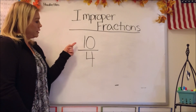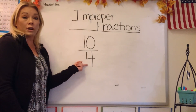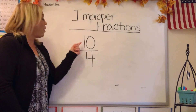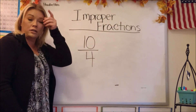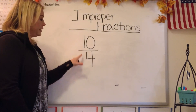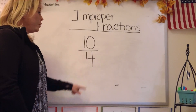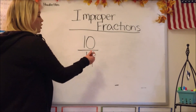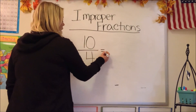For the next improper fraction, we have 10 fourths. Obviously this is not a practical fraction — we can't take 10 parts when there are only 4 to start with. So we need to turn it into a mixed number.